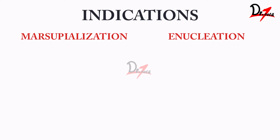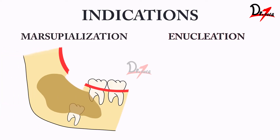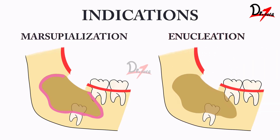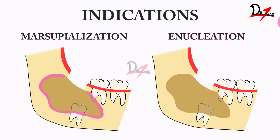Let us understand when we do marsupialization — what are the indications? Broadly, we have two major terms: marsupialization and enucleation. In marsupialization, we keep the cystic lining intact and we don't remove it. But in enucleation, we remove the entire cystic lining. There are certain cases where removing the entire cystic lining is not possible, so in all those cases when we cannot do enucleation, we have the option of marsupialization.